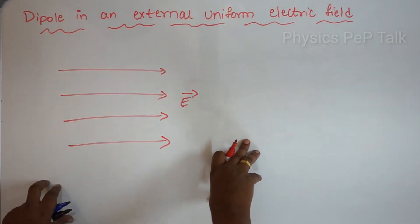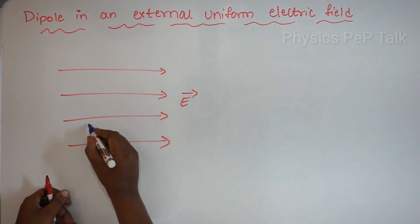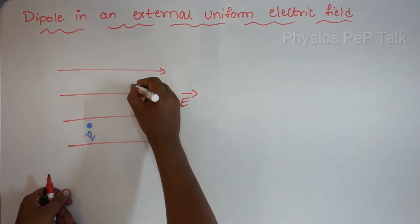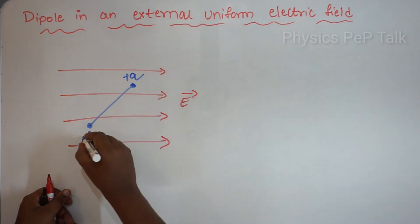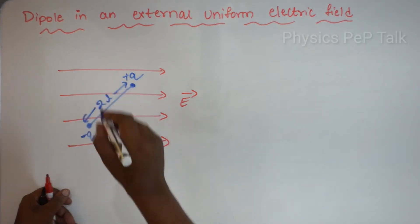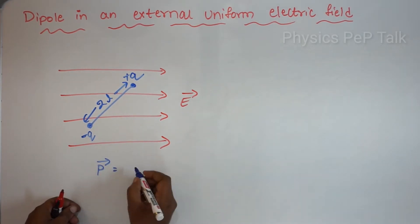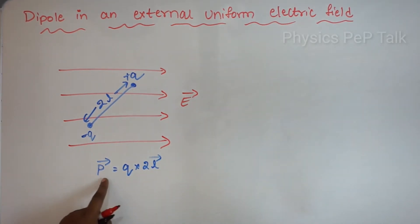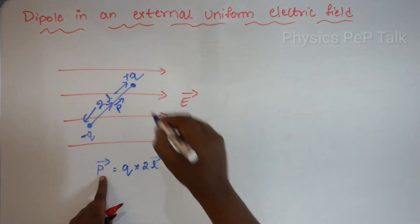Such a field is called a uniform electric field. Now, dipole in an external uniform electric field — a dipole is nothing but two equal and opposite charges, plus q and minus q, separated by a very small distance 2l. The dipole moment p is defined as charge into the length of the dipole, and the direction of the dipole moment is always from the negative charge to the positive charge.